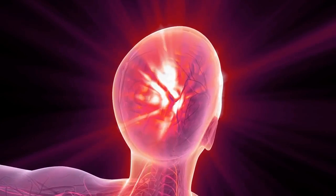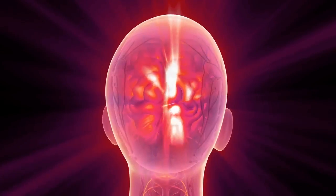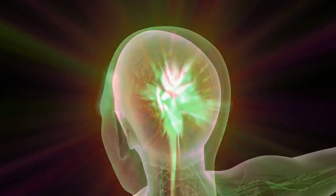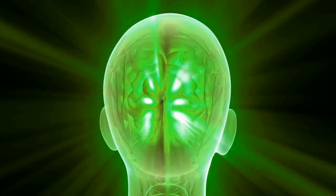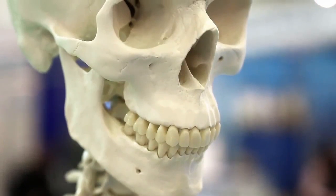The entire cerebrum is enveloped in a layer of gray matter called the cerebral cortex. Its deeply wrinkled surface packs maximum processing power into the tight quarters of your skull.